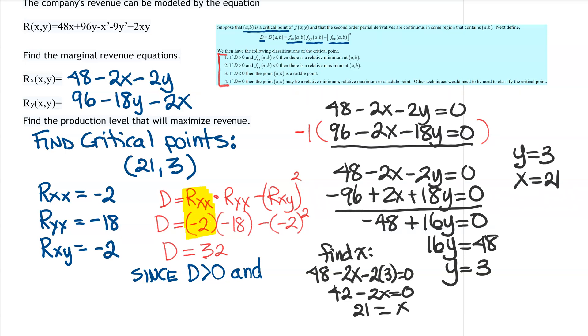And if you notice, that comes out to be a negative. So the D is positive, and the R of xx is negative. So if you look at your set of rules, and if you think back on second derivative tests before, when the second derivative is negative, it's kind of like concave down. So it would make sense that what we're getting here is a maximum.